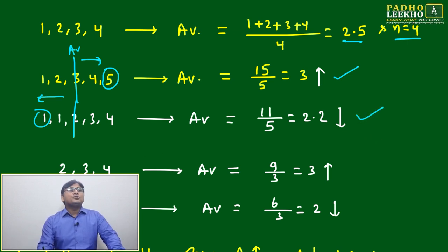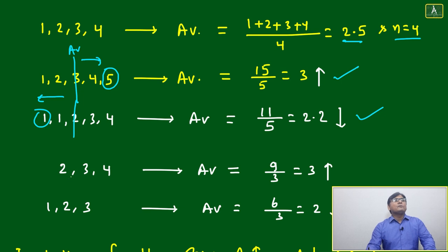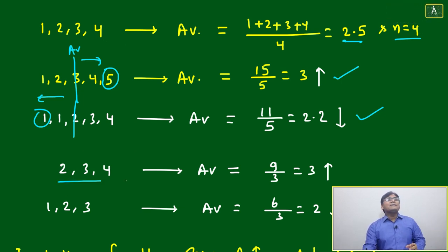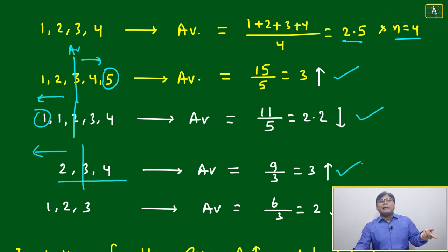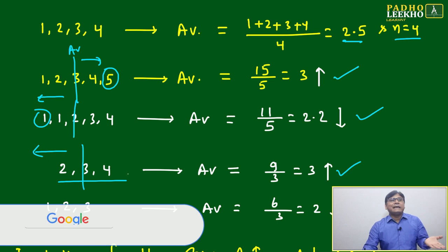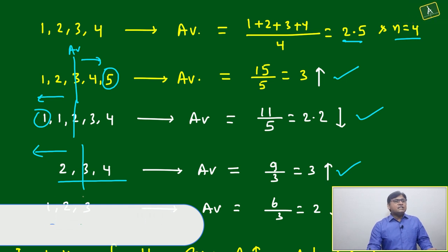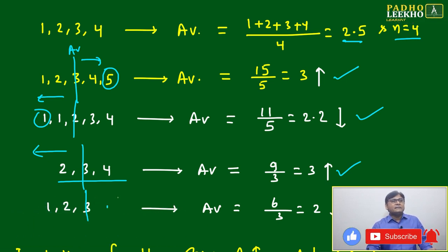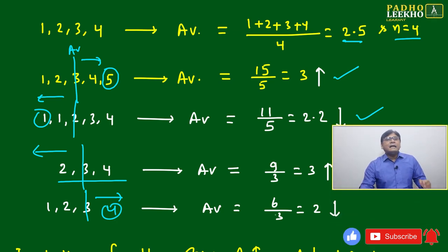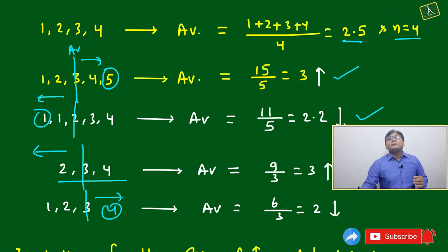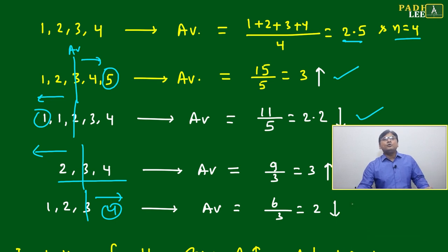Now consider the opposite case — if n is decreasing, meaning you are removing a number. Earlier n was 4, now making it 3 by removing a number from the left side. The average will go up: the existing numbers become 2+3+4 = 9, divided by 3, giving average 3. Conversely, if you remove a number from the right side — say, remove 4 — existing numbers become 1+2+3 divided by 3, which is 2. Average decreases.